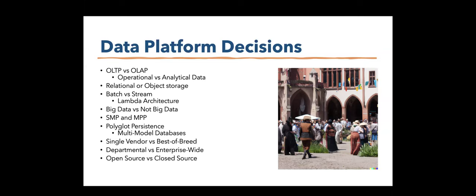SMP — symmetric multiprocessing — has multiple cores in a single CPU working together, usually good for smaller OLTP-type systems. MPP — massively parallel processing — is shared-nothing, where each processor has its own dedicated resources.